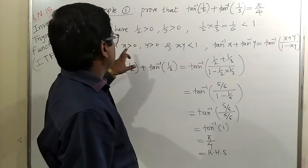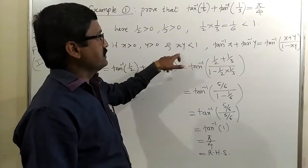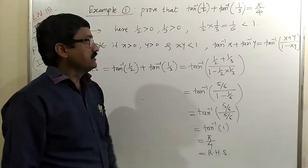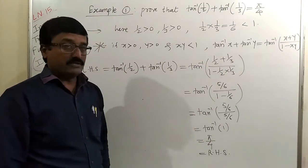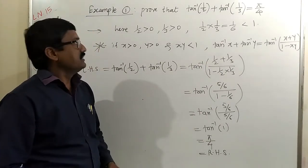When solving, first we have to check these conditions — whether x and y are positive, and whether their product xy is less than 1, greater than 1, or equal to 1. Let us see the second example.